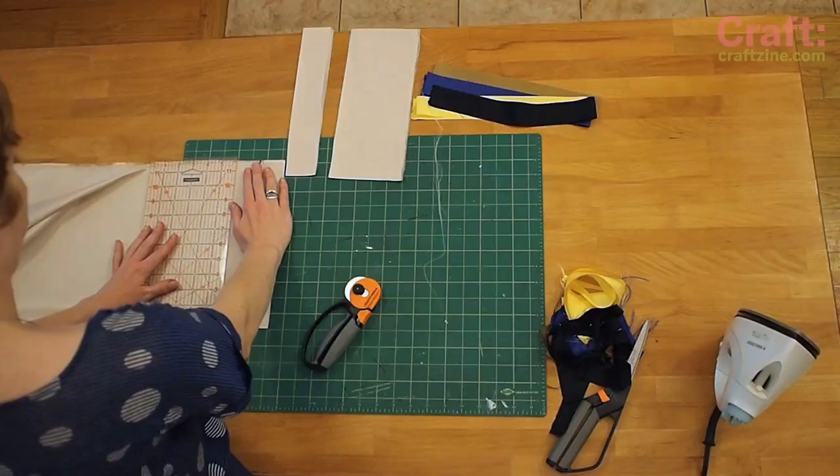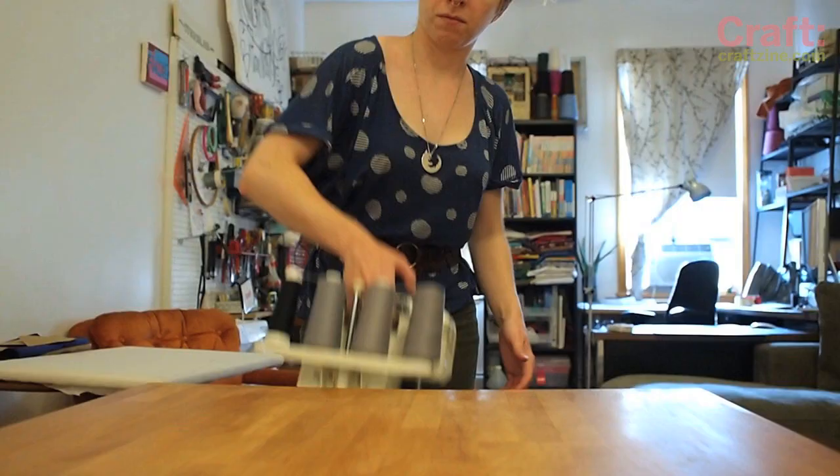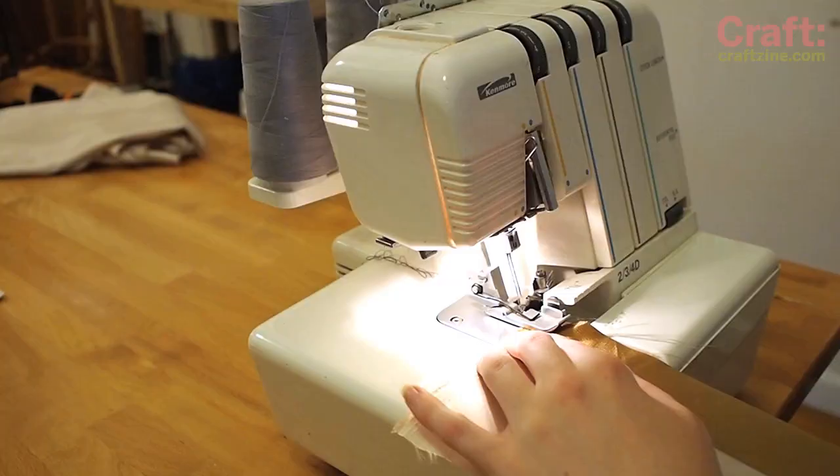Now to make a resistor necktie, cut a bunch of colored satin fabric strips to match your favorite resistor. You'll do this along the grain, so I'm folding it and then using my rotary cutter to make some nice straight strips.